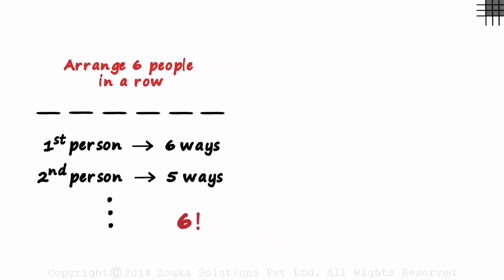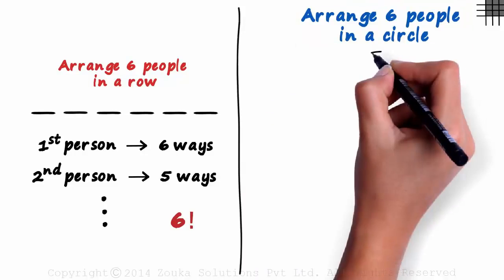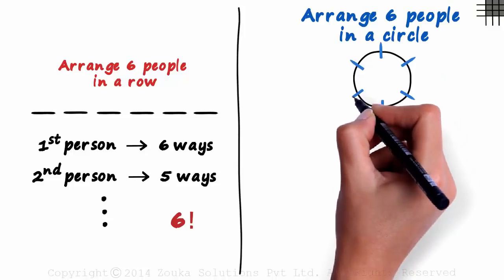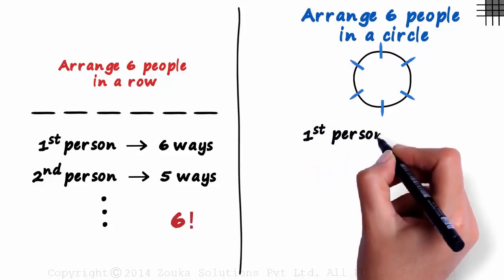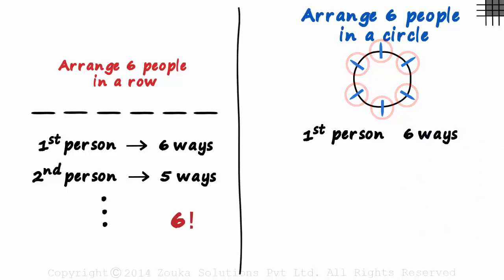Now let's move on to the circular arrangement case. In how many ways can we arrange six people in a circular fashion? Let's draw a circle — assume it's a circular table with chairs around it. Six people can be seated like this. Now let's follow the same approach. In how many different ways can the first person be seated here? As there are six chairs around the table, the first person can be seated in six different ways. Correct?